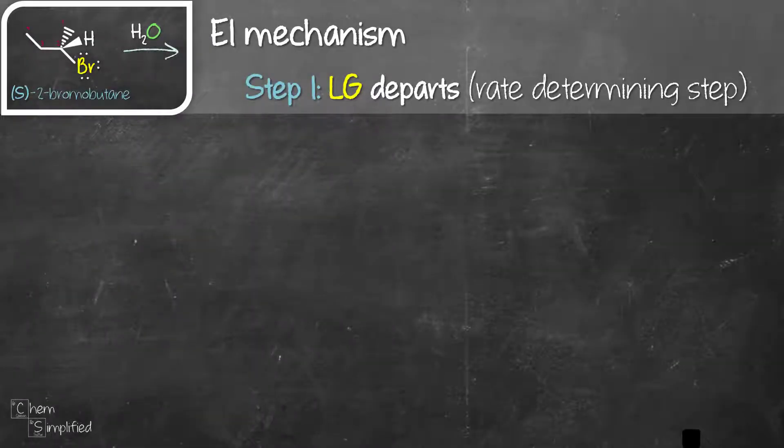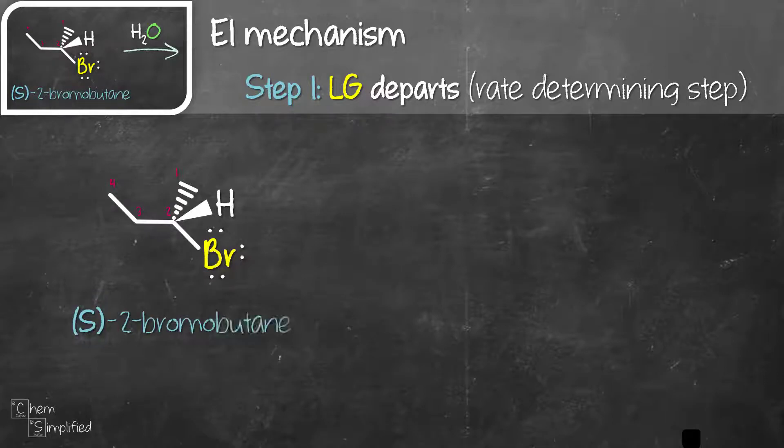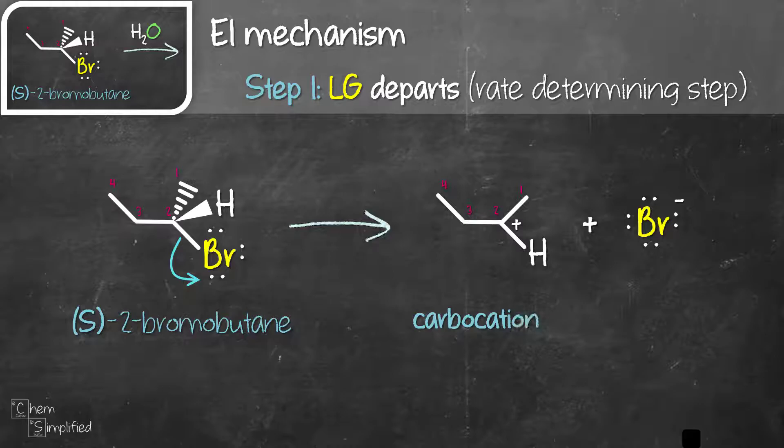We're going to use 2-bromobutane as our substrate. The first step in E1 reaction is the departure of the leaving group, just like in SN1. In our example, bromine is going to be the leaving group so it's going to leave and then it will form a carbocation and a bromide ion.